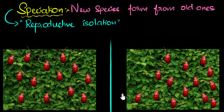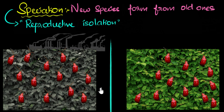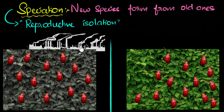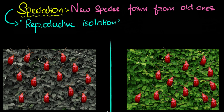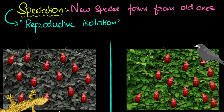As time passes and more generations come, natural selection and genetic drift will start working differently in these different environments, eventually producing two different species. Let me tell you how these two places differ. The first location's bushes are gray, covered with smoke from a large factory nearby. There are also a lot of crows that eat the beetles. In the second environment, the bushes are green, there are no crows, but instead there are lots of lizards that eat the beetles.